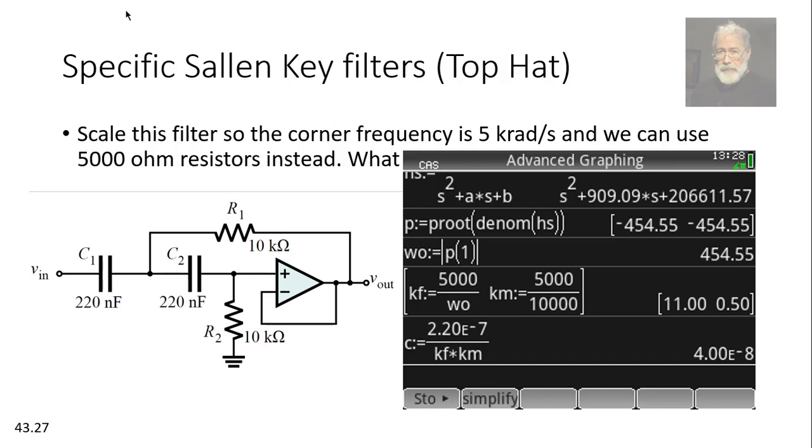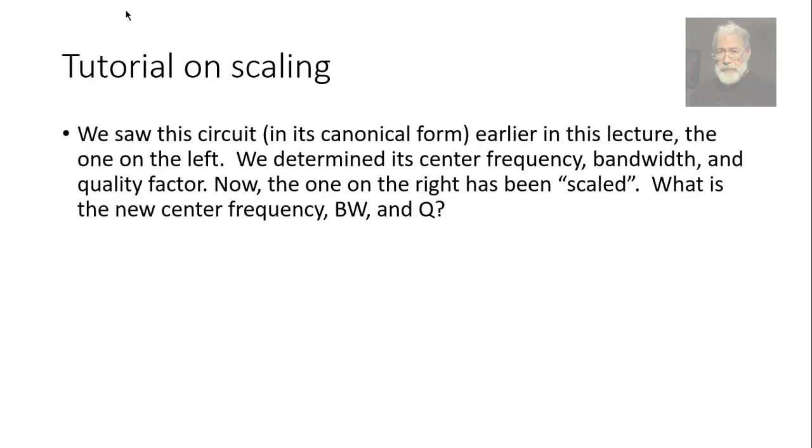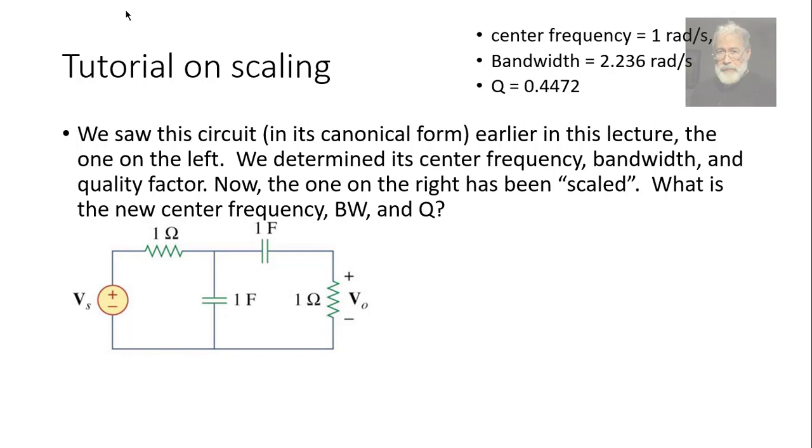Another one. Yeah, another one. Sure. This one. More scaling. We saw this circuit before in another video of this series. The one on the left. We determined that that is a bandpass filter and we learned what was the center frequency. It was 1 radians per second. The bandwidth was 2.236 radians per second and the quality factor was 0.4472. I believe it was the last video before this one.